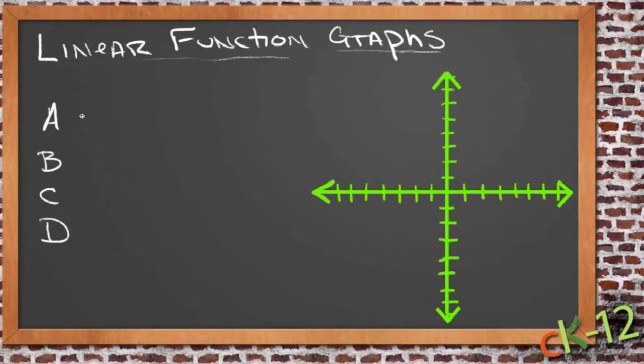If my four outputs are say 2, 3, 4, and 5, and my four inputs are A, B, C, and D, this could be a function because each individual input has one and only one output.